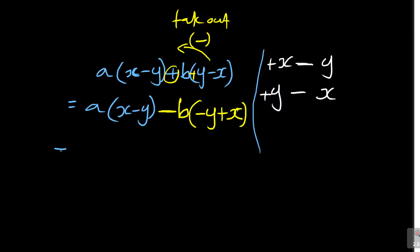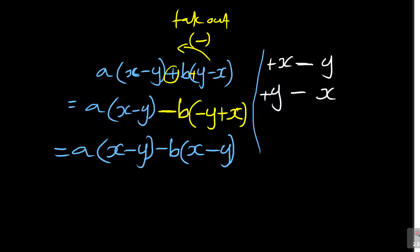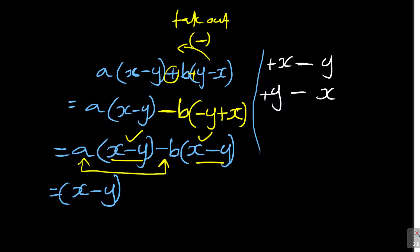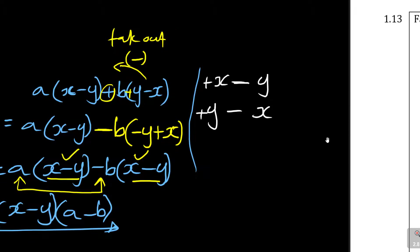When I write it out: A times bracket X minus Y, now it's minus B times bracket X minus Y. Now you can see both brackets are X minus Y. So the answer is bracket X minus Y, times bracket A minus B.